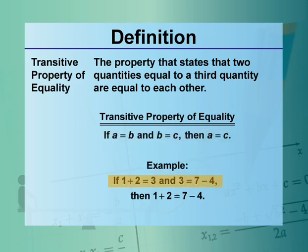If 1 plus 2 equals 3, and 3 equals 7 minus 4, then 1 plus 2 is equal to 7 minus 4.